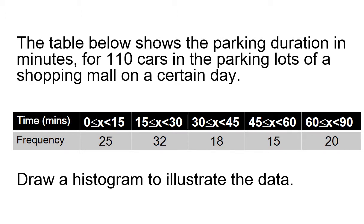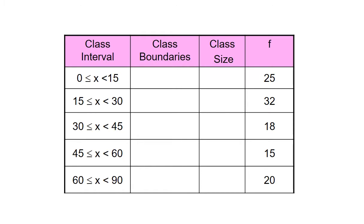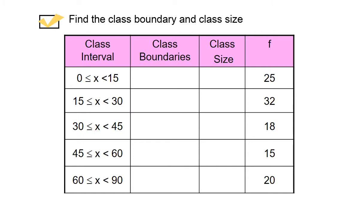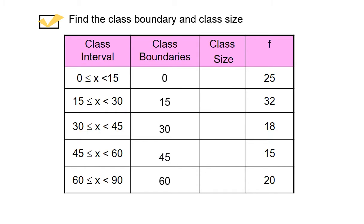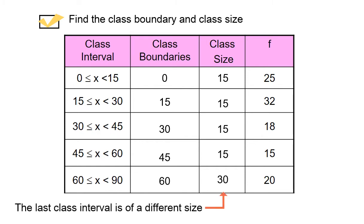Next, try to construct a histogram to illustrate the data showing the parking duration in minutes for 110 cars. Remember the steps: find the class boundary followed by the class size. Since the class interval is written in this form, it is sufficient to state the lower boundary of each class interval as the class boundaries. To find the class size, subtract the lower boundary from the upper boundary. Notice that the last class interval is of a different size.